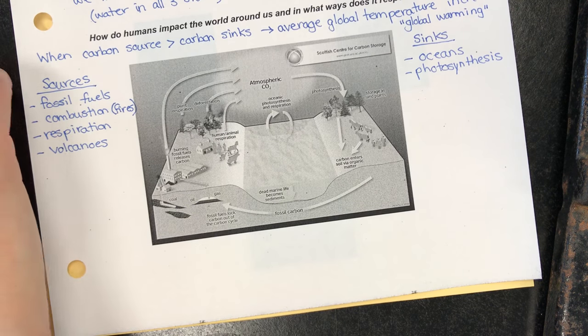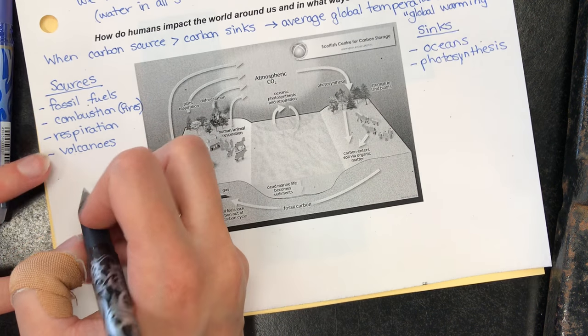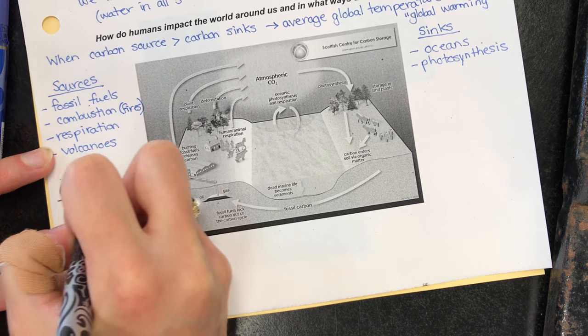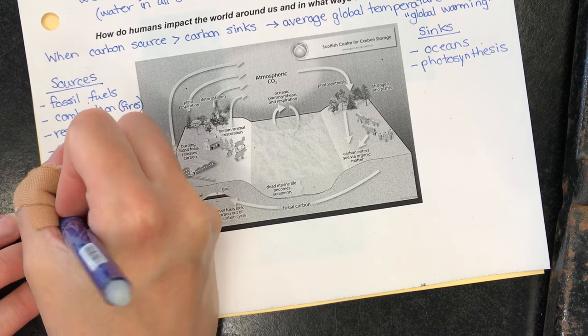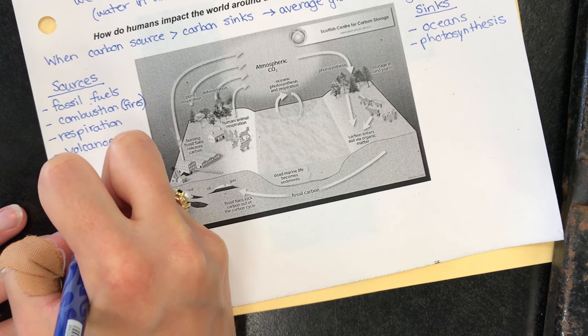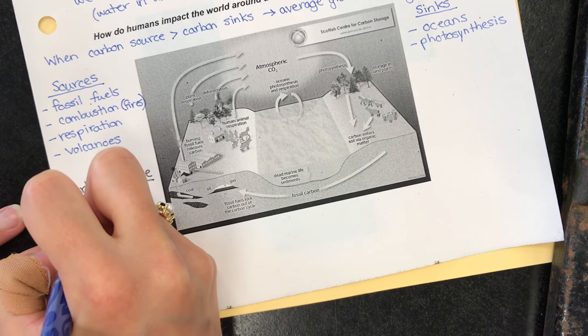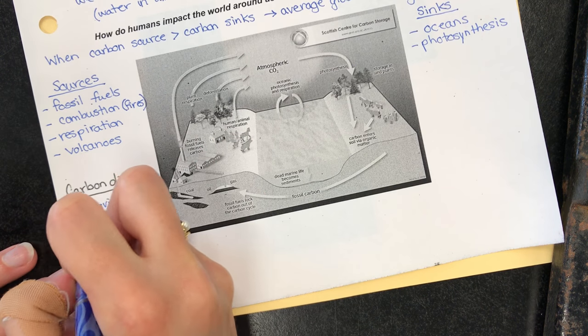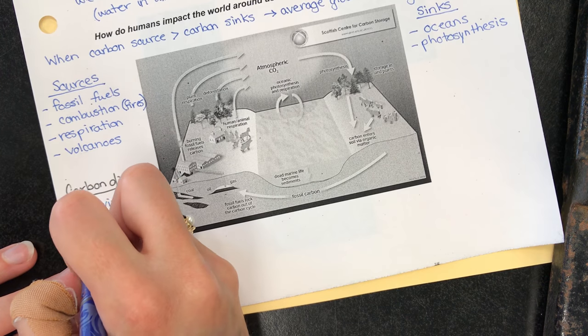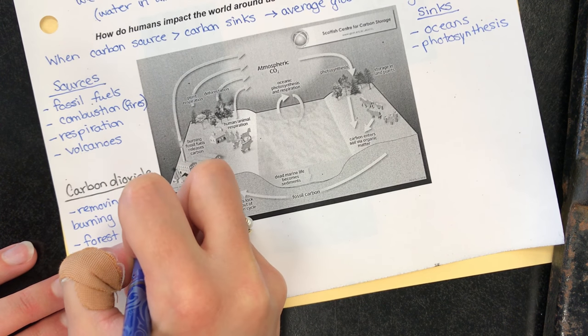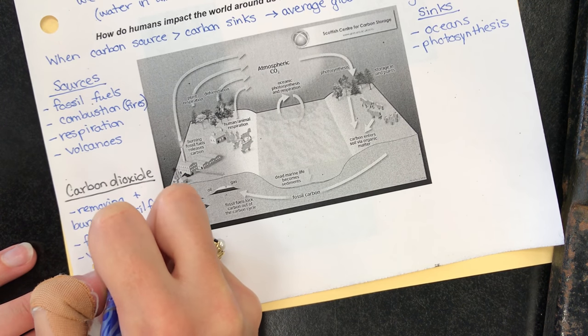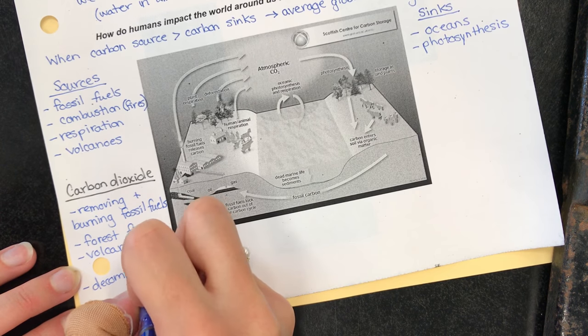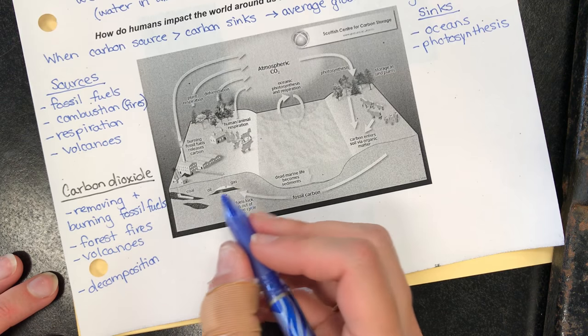So let's look at some of the greenhouse gases. We'll go over the four main ones. We'll start with carbon dioxide. Carbon dioxide comes from removing and burning fossil fuels, from forest fires, because remember combustion always creates water and carbon dioxide. Also volcanoes and decomposition, so think of decomposing plants and trees in swamps.